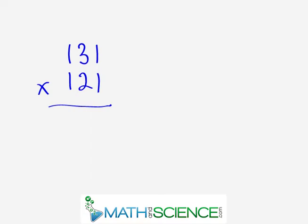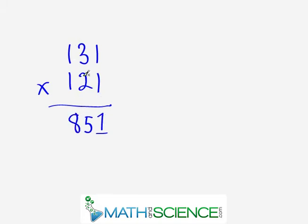Our next problem is 131 times 121. Start in the right-hand column: one times one gives us one. Next, crisscross: three times one is three, plus one times two is two — three plus two gives us five. Now the three-way crisscross: this gives one, plus one, plus six — adding them up: six, seven, eight. Write an eight. Next, crisscross in the leading two columns: three plus two gives us five. Finally, the leading multiplication: one times one gives us one. So we have 15,851.